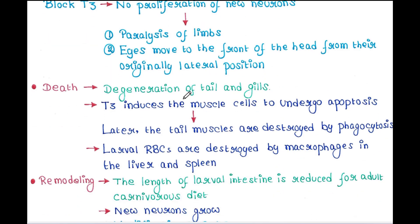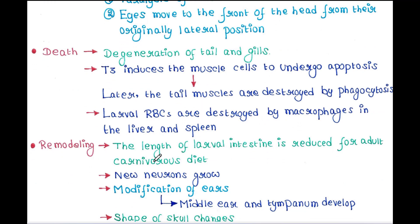Next is death. Degeneration of tail and gills occurs. T3 hormone induces muscle cells to undergo apoptosis, and later the tail muscles are destroyed by phagocytosis. Larval red blood cells are destroyed by macrophages in the liver and spleen.